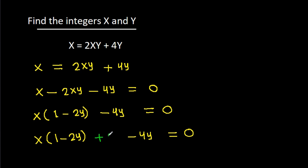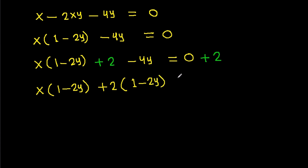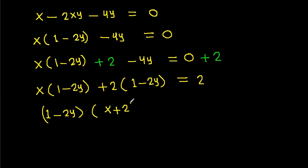If we add 2 to both sides, we get x times (1 minus 2y). Then we can take 2 common from the remaining terms, giving 2 times (1 minus 2y), and that is equal to 2. We can then take (1 minus 2y) common, resulting in (1 minus 2y)(x plus 2) equals 2.